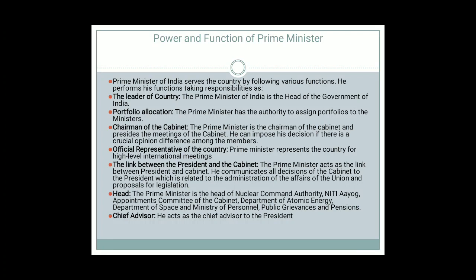The Prime Minister is also the chief advisor to the President. Under executive power: he forms the Council of Ministers — appointing, removing, and distributing portfolios to ministers; he presides over Cabinet meetings; he is the leader of the Council of Ministers; and he is the principal channel of communication between the President and the Council of Ministers. He also prepares the list for various important appointments such as governors, judges of the Supreme Court and High Courts, members of the UPSC, the Election Commission, ambassadors and high commissioners — though these appointments are formally made by the President.